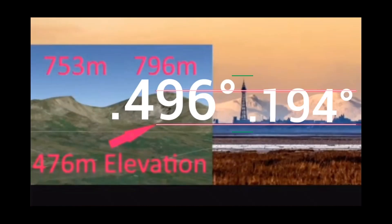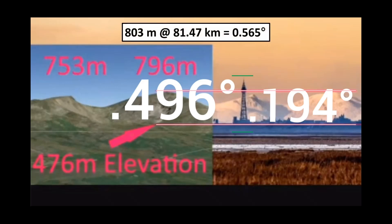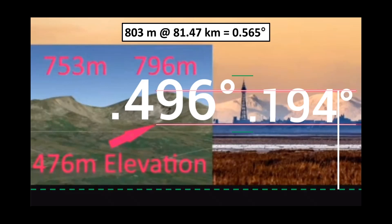Just to rub Brian's nose in it a little bit more, let's assume that his angular size calculation of 0.194 degrees between those pink lines is correct, and then see where the base of Old Man of Coniston is if we apply the full size. The full size of the mountain is 803 metres, and at a distance of 81.47 kilometres, this gives it an angular size of 0.565. That means we need to scale the mountain to almost three times bigger than the space between the pink lines, and that puts the base of the mountain way down here.